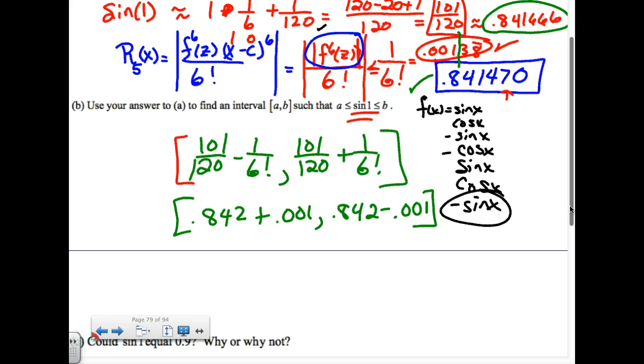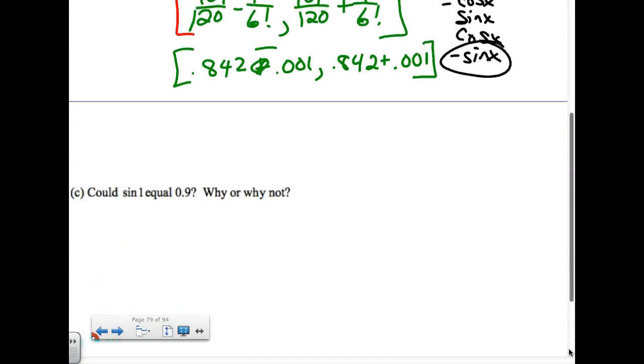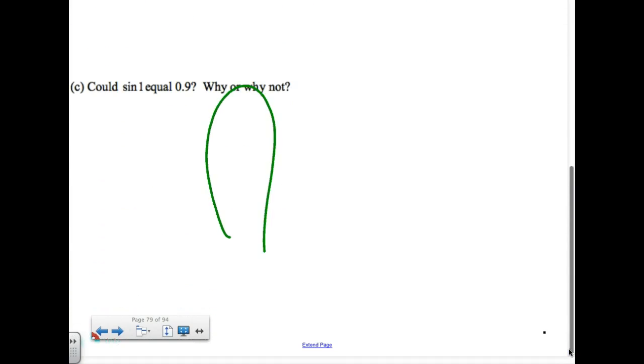And you would have a reasonable window. Does this actual one fall in that window? Because when we started, I had Keith do sign one. Is it in my window? Oops, I should have gone down. Sorry, down and then up. It will be in my window if I hadn't rounded so much. Then last one says, could it equal point nine? No. Why not? It's not in the interval.